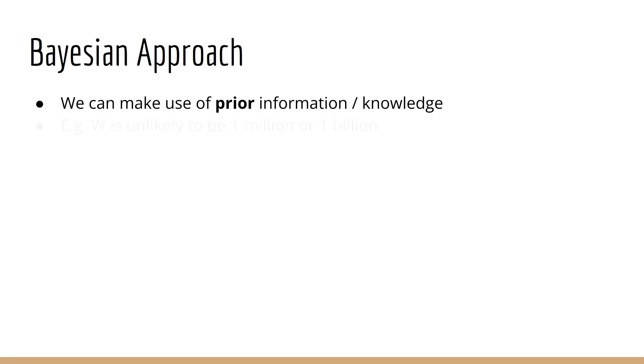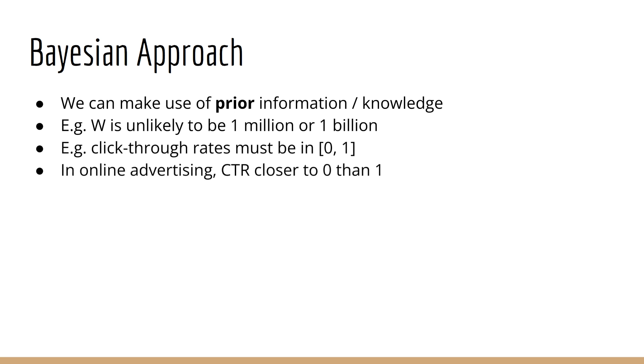For example, we know that W is unlikely to have values of 1 million or 1 billion. Another example is with click-through rates. We know that click-through rates must be between 0 and 1. And if you're in online advertising, then you know that it's normally closer to 0 than it is to 1.